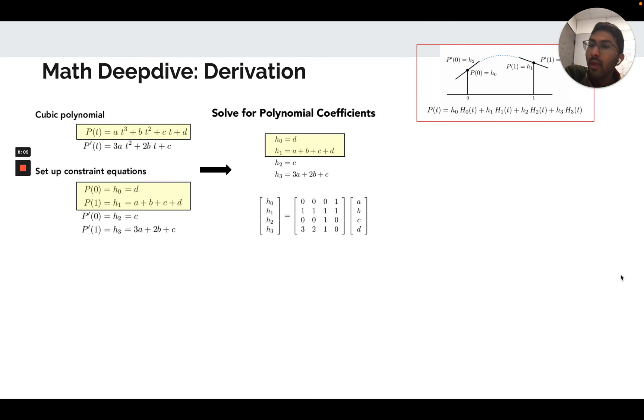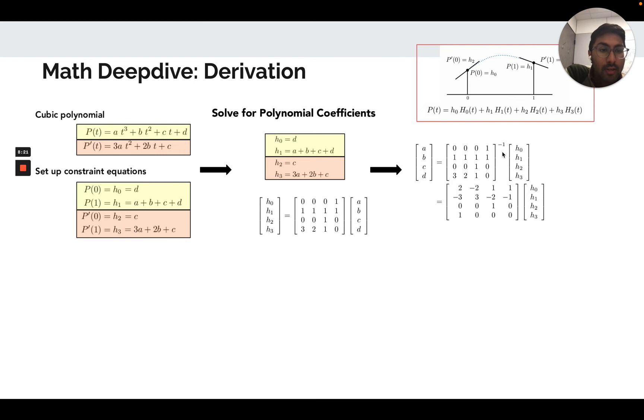So as a recap, the first two constraints come from the polynomial, and the second two come from the tangents. In order to solve for the coefficients, we need to move this matrix over to the left side, and this is done by inversion. So let's invert this matrix. You can solve for that inverse, for example, by row reduction or use a numerical solver. But in closed form, this is the result of that inversion.